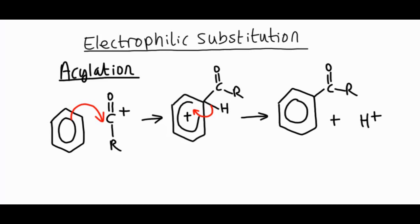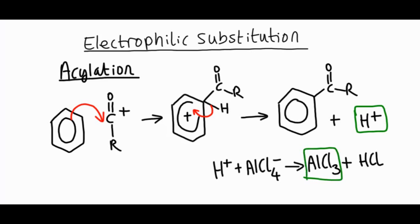And we've now created a ketone and a hydrogen ion. And that hydrogen ion that has been kicked out in the second step can react with the AlCl4 minus. And it removes one of the chlorines to form AlCl3 and HCl. So if you think about it, AlCl3 has been regenerated. So it must be acting as a catalyst in this reaction.